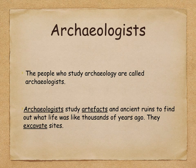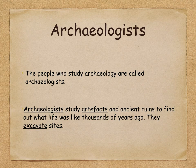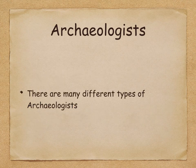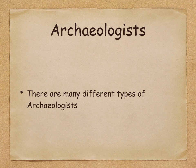The people who study archaeology are called archaeologists. Archaeologists study artifacts and ancient ruins to find out what life was like thousands of years ago, and they also excavate sites. There are many different types of archaeologists across a variety of fields. Generally, there are about eight time periods designated for archaeology, ranging from the Stone Age up to what they term the Islamic Age, which runs from about the mid-600s up to the present day.